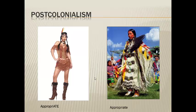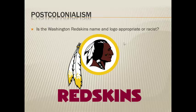For example, there's the idea of how we appropriate culture. This picture on the left shows an appropriation of native cultures to make a costume — non-native people dressing up as natives — as opposed to an appropriate use, which would be a native person using that ceremonial dress for its intended purposes. This plays into certain controversies we see today. In the sports world, a big controversy right now is using native peoples as mascots. For example, the Washington Redskins name and logo — is it an appropriate use? Is it respectful or is it racist?